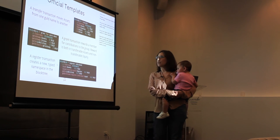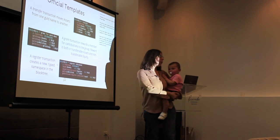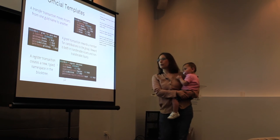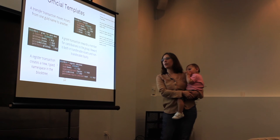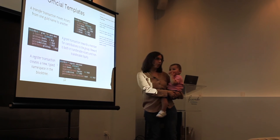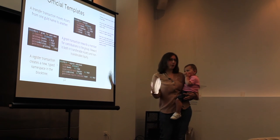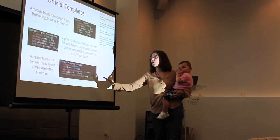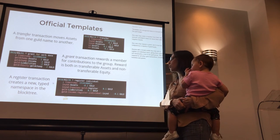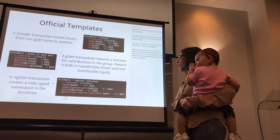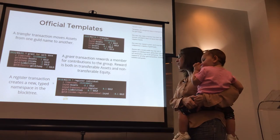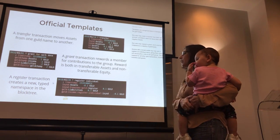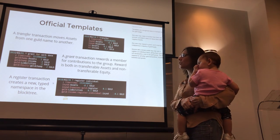There's also a grant transaction, as we saw before, for work that was done. Additionally, any individual or group who wants to participate on the network needs to register their user or group. In this case, you can see this is a register transaction for an individual — in this case, ICT — and this is how you create an individual on the Gold Ledger.